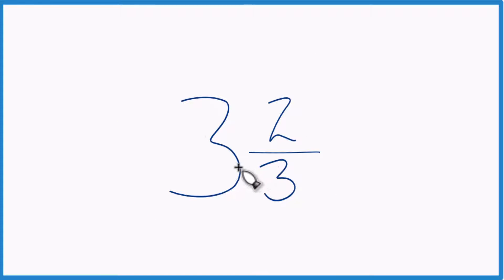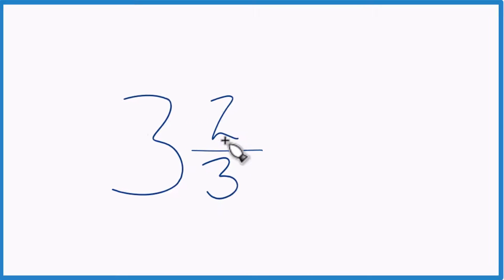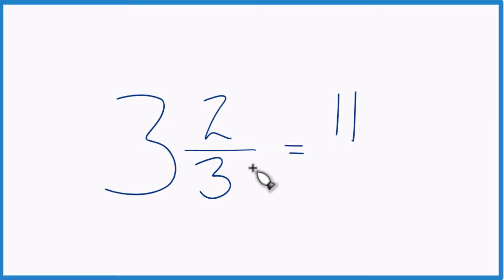We take the whole number, 3, times the denominator. 3 times 3, that's 9, plus 2. 9 plus 2, that equals 11. And then the denominator, 3, we just bring that across.